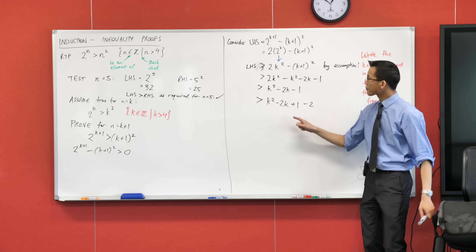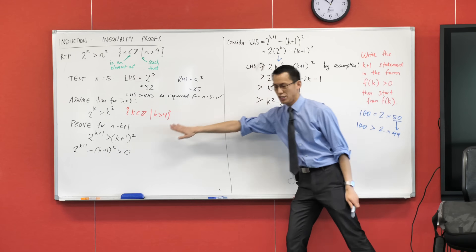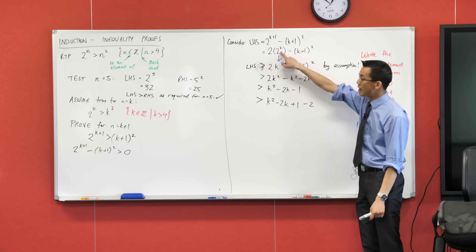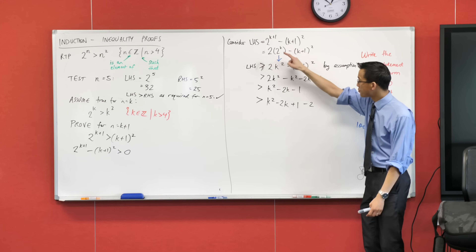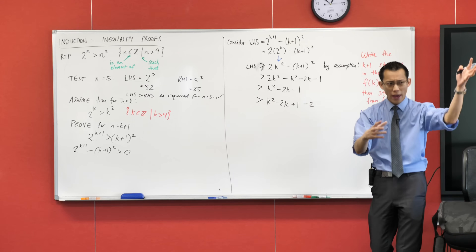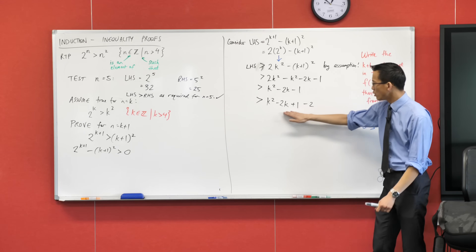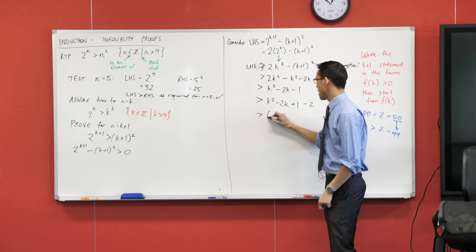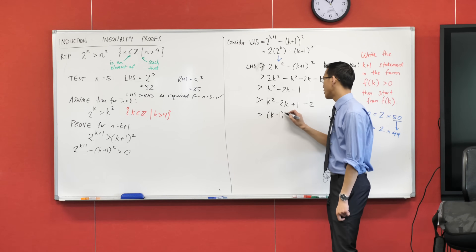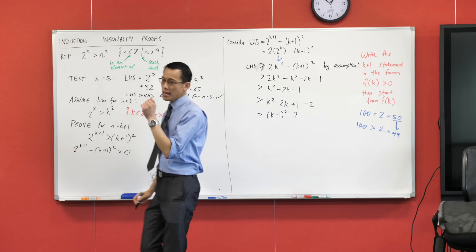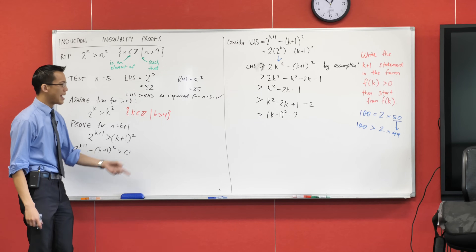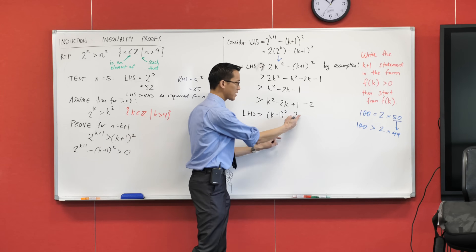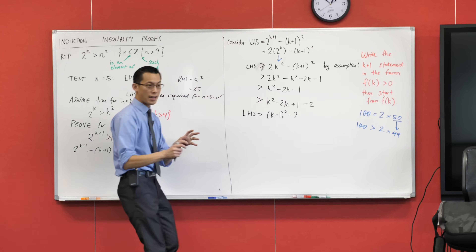The reason why is because when you think about proving that something is greater than zero, things that you're looking for are exponentials — that thing is bigger than zero no matter what value of k you put in it — and also squares. When you've got something squared, these things tend to be positive. So when I look at this guy here, I can factorize this: this guy is going to be k minus 1, all squared. Now this is useful to me because I can actually say, if I can prove that this thing is positive, then I'm good to go.